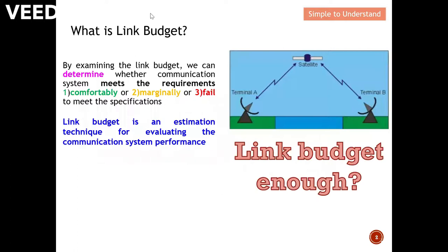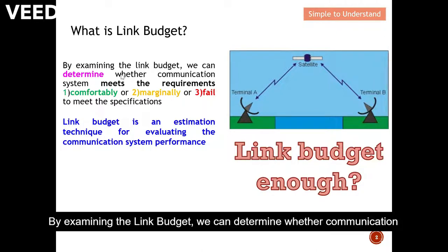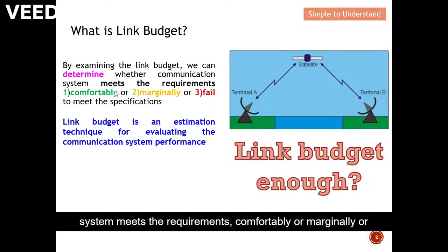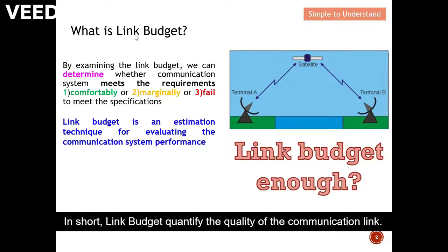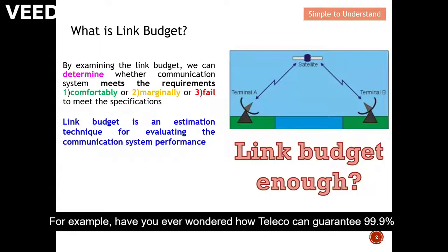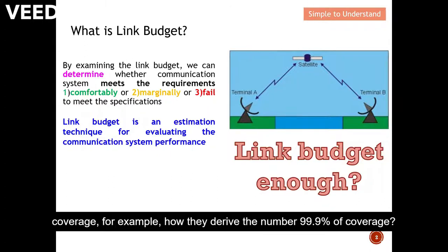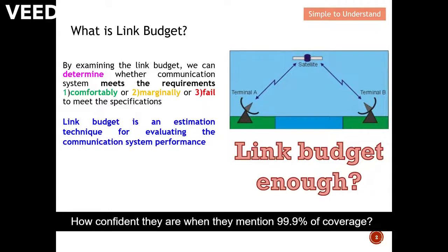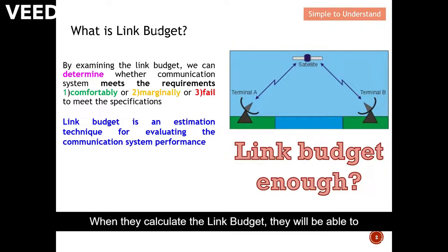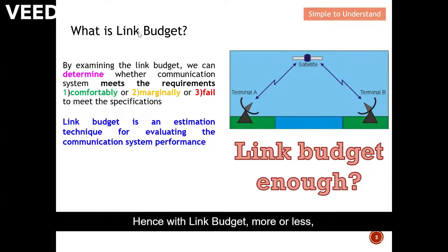Let's start. What is link budget? By examining the link budget we can determine where the communication system meets the requirements comfortably, or marginally, or fails to meet the specification. In short, link budget quantifies the quality of the communication link. For example, have you ever wondered how a telco can guarantee 99.9% coverage? Behind the scenes, they actually calculate the link budget to determine whether the communication link is able to be established.